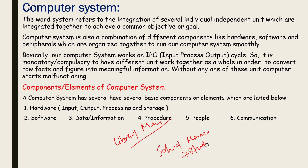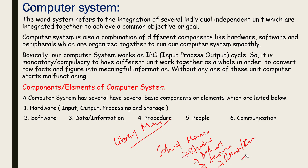In a school management system, the individual components include: students, school infrastructure, teachers, course curriculum, school rules and regulations, education, and the society/community.